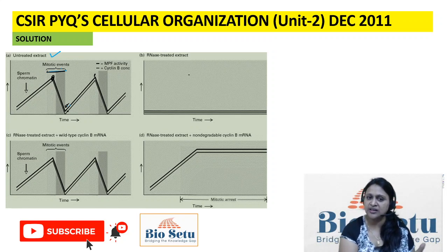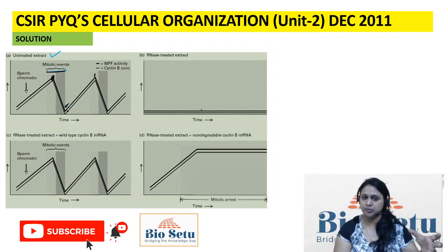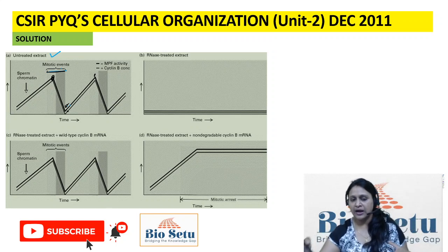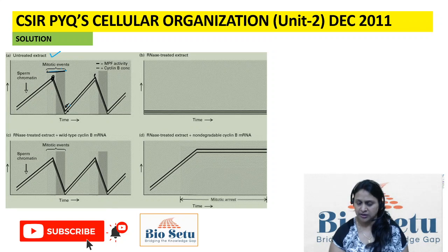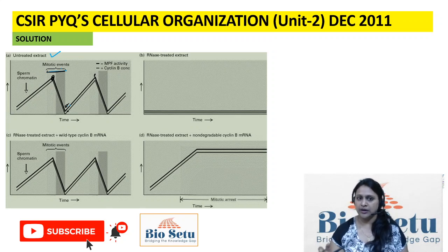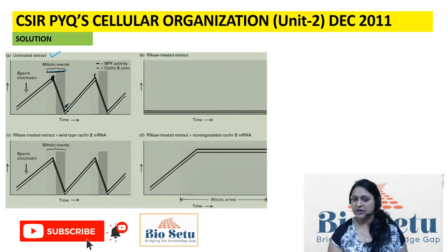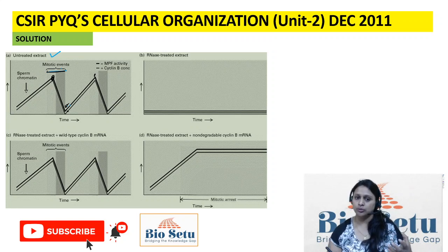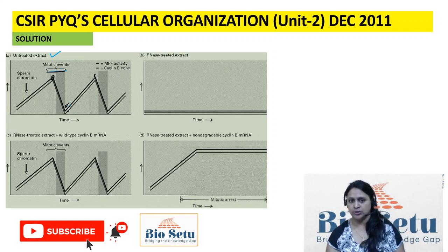The second condition is when we take RNA-treated extract — sperm chromatin is also RNA-treated and the egg is also RNA-treated. Because of RNA treatment, M phase will not proceed and nothing will be made. RNA is treated, meaning the destruction box has been degraded and Cyclin B has been destroyed, so no activity will be shown.